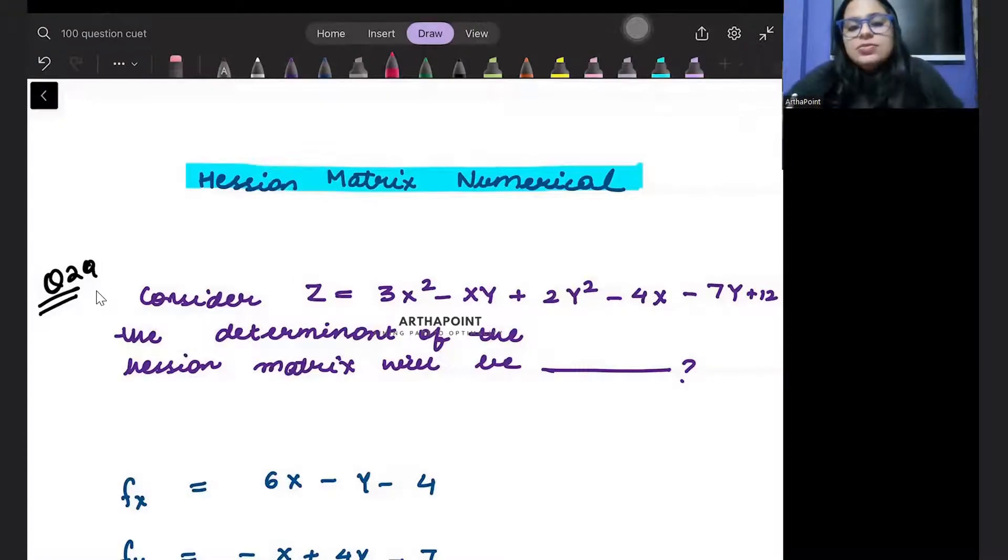Good evening everyone. Welcome to day 29 of CUET 100 quotients 100 days series. Let's look at today's quotient. This is based on Hessian matrix. So you are given a function z equals 3x squared minus xy plus 2y squared minus 4x minus 7y plus 12 and you have to find the determinant of the Hessian matrix.